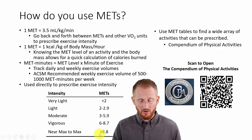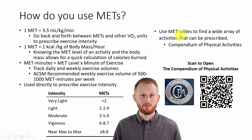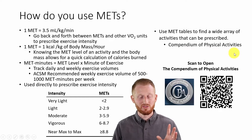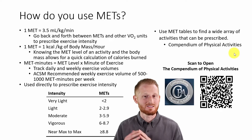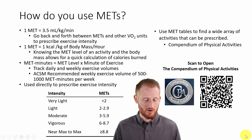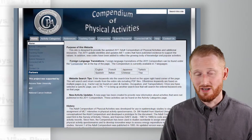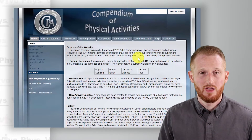You're going to need to be able to look up what the MET levels of various activities are, so you'll need to find MET tables. I'm going to show you the Compendium of Physical Activities, which is the most all-inclusive MET table database I've been able to find. The good thing is it's a free website — if you scan the QR code, it'll take you there. This is the Compendium of Physical Activities; there's a lot of really good information on this website, and I highly suggest you search around the different menus.